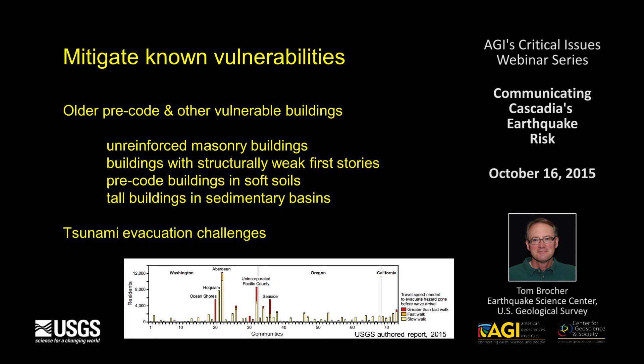We also have significant tsunami evacuation challenges. A figure from a recent USGS report shows communities numbered up to 73 from Washington, Oregon, and California, with columns showing the number of residents and colors indicating whether those residents can evacuate to higher ground at a slow walk, a fast walk, or not at all. Most communities are small and can be evacuated at a slow walk, but a few have up to 12,000 residents, some of whom cannot walk their way to safety. Different communities have different needs for evacuation planning.